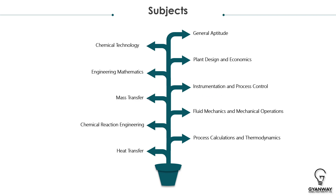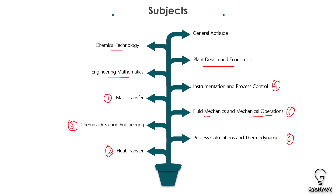In Chemical Engineering there are six major subjects: Mass Transfer, Heat Transfer, Chemical Reaction Engineering, Process Control and Instrumentation, Fluid Mechanics and Mechanical Operations, and Thermodynamics. Engineering Mathematics is separate. The smaller Chemical Engineering subjects are Chemical Technology, Plant Design and Economics, and Mechanical Operations — which is grouped with Fluid Mechanics here.